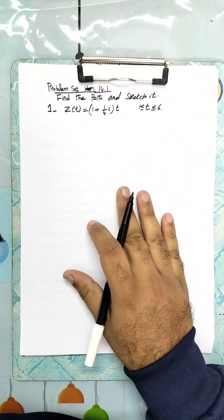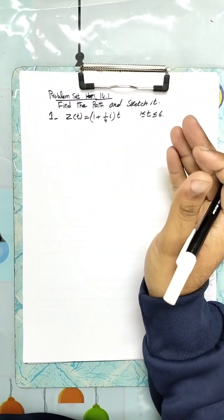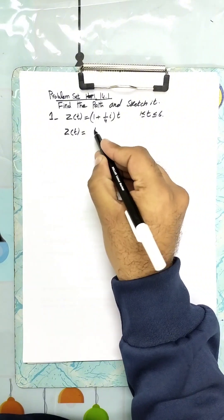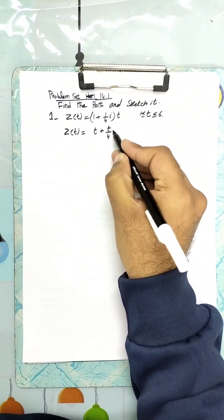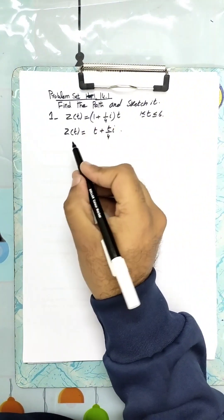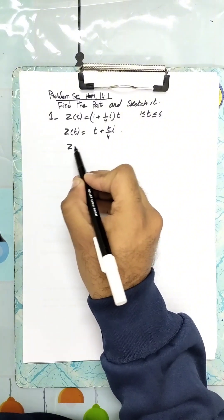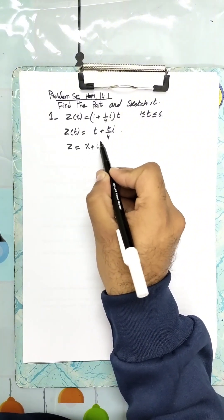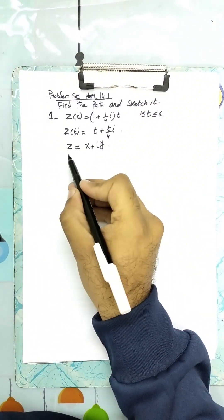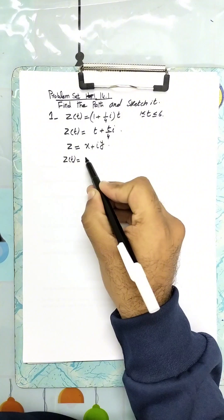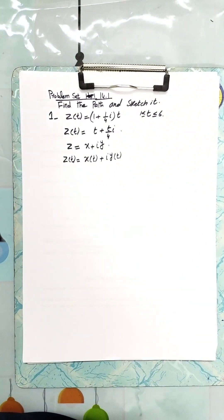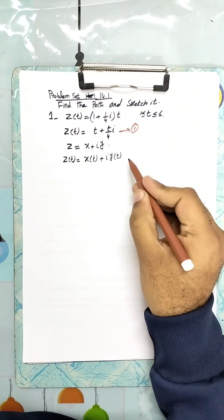First we write z of t in general notation, separating the real and complex parts. So z of t equals t plus (t/4)i. We know that z equals x plus i·y, which is the general definition of a complex number. We also write this in parametric form as z of t equals x of t plus i·y of t — this is equation 1 and equation 2.